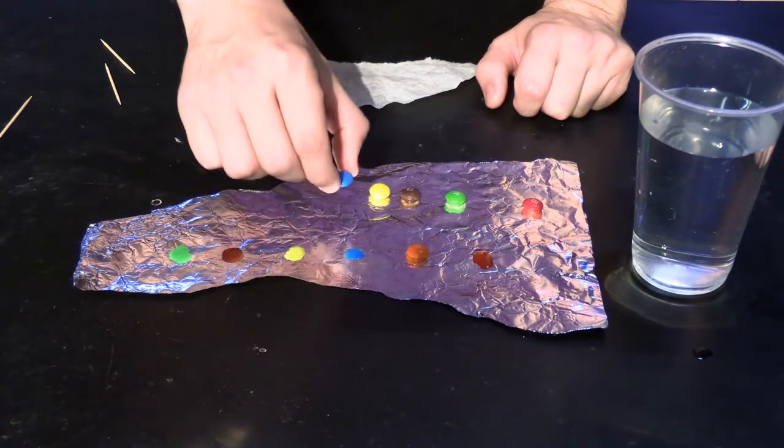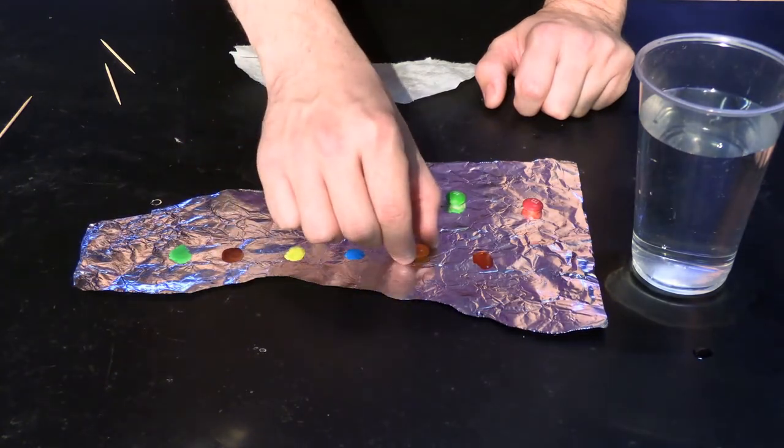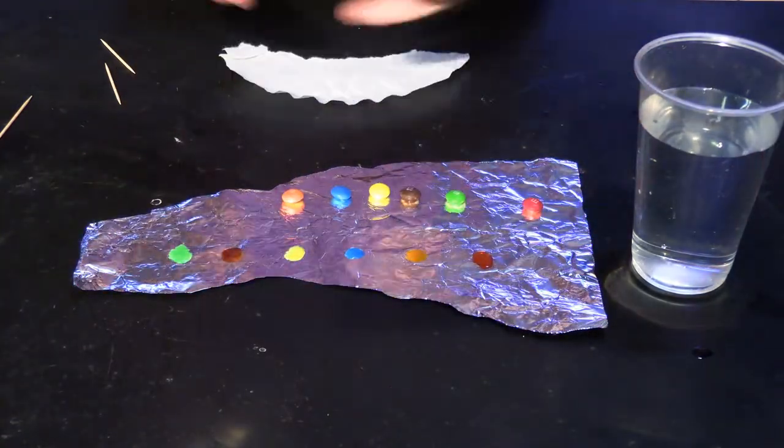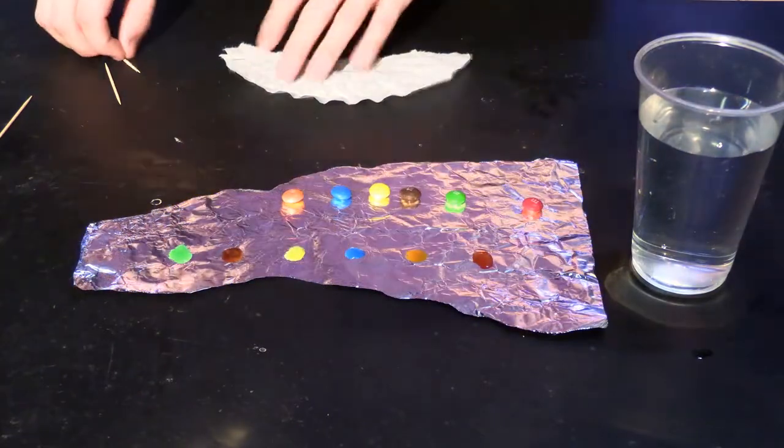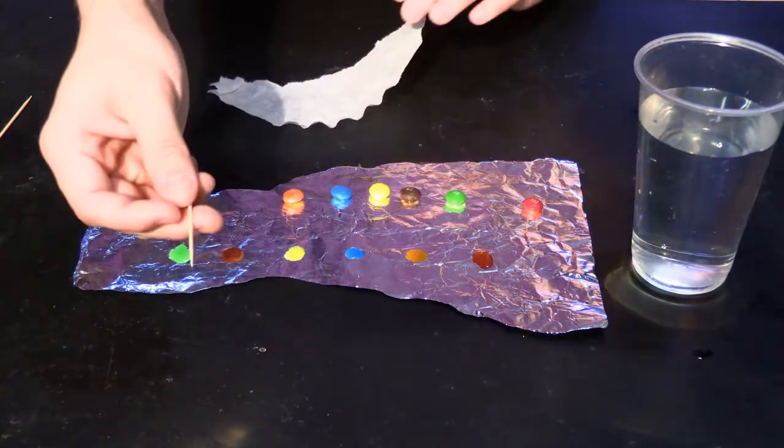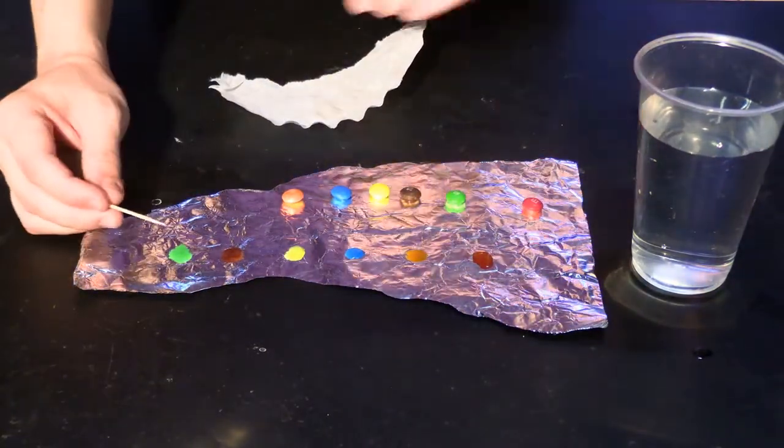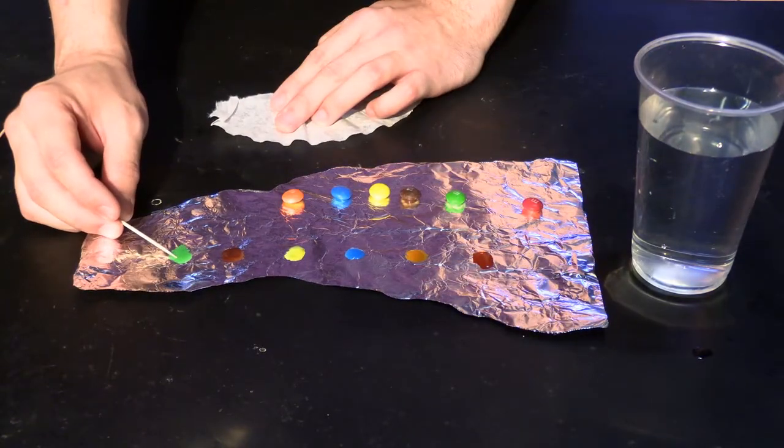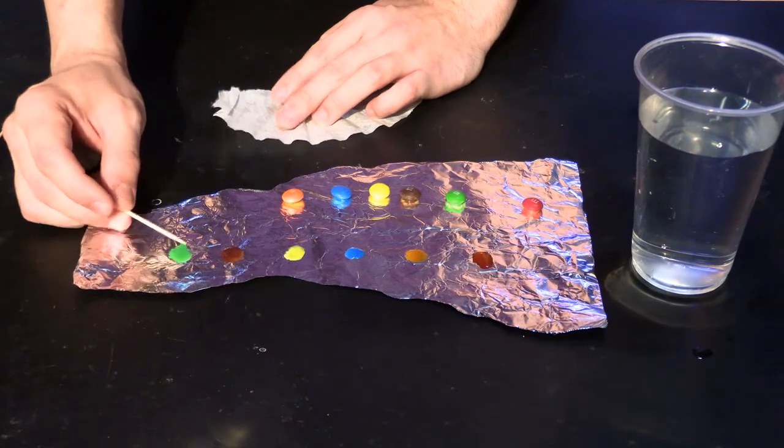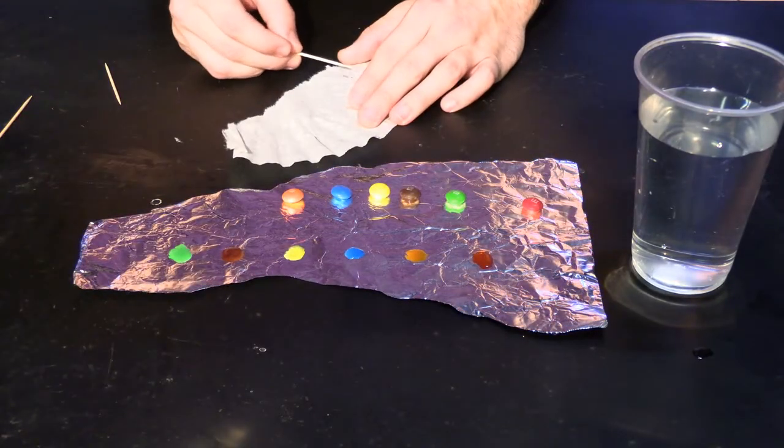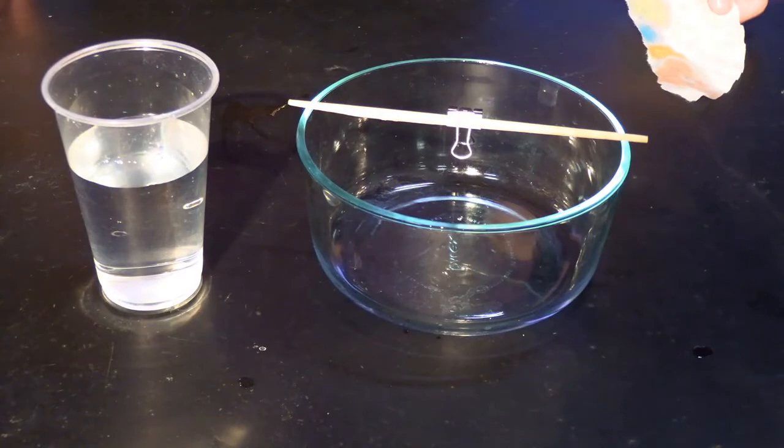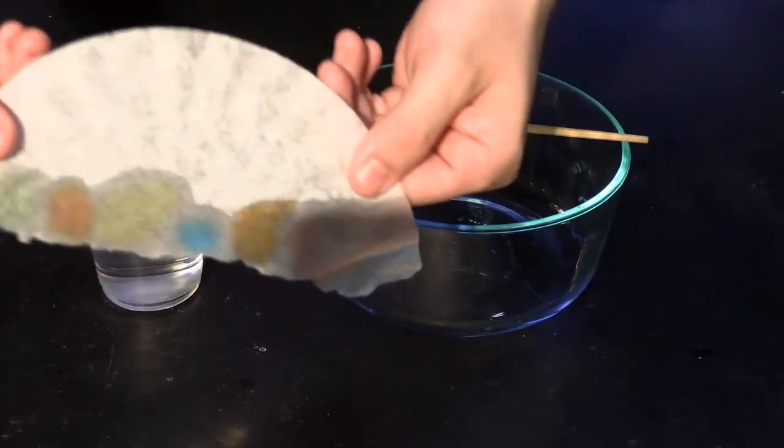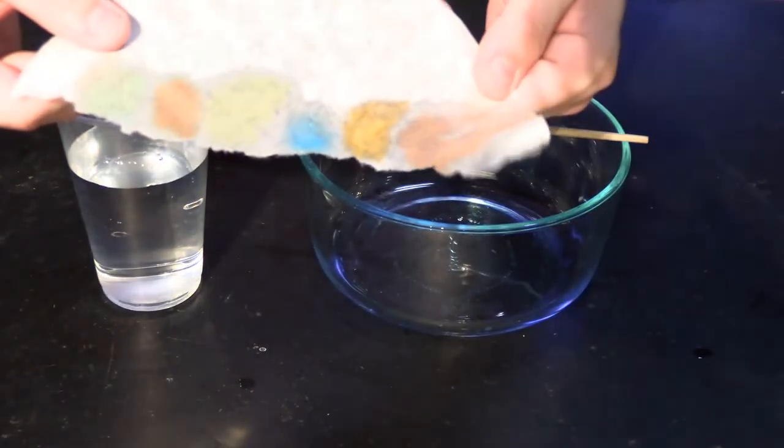Now this science that we're doing is a technique called chromatography. Chromatography is used by scientists to help understand what substances are made of. Basically you're tearing apart a substance to understand what's inside of it. So we're going to take our toothpicks now and dip this into the green. As you can see, we have some color on our sheet right here. This is all the dyes from our candy.